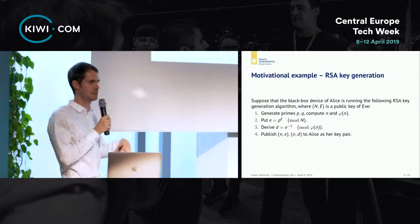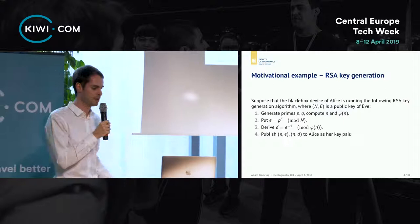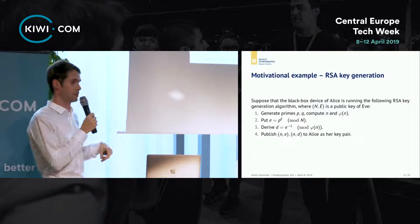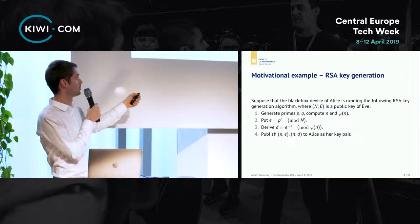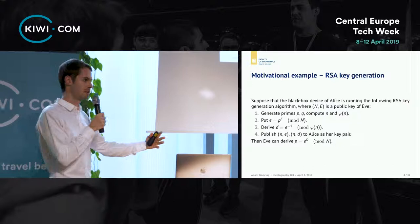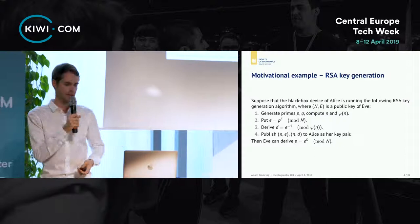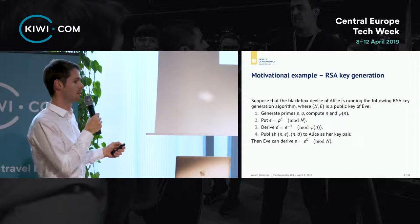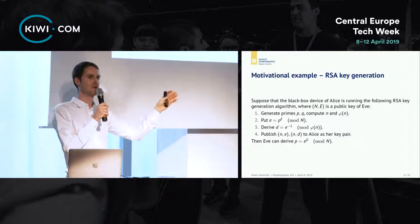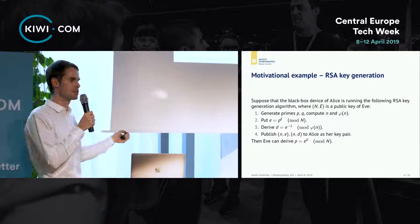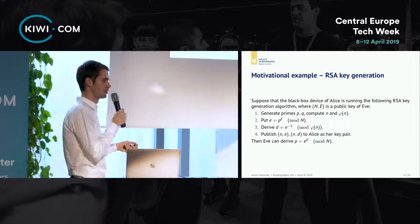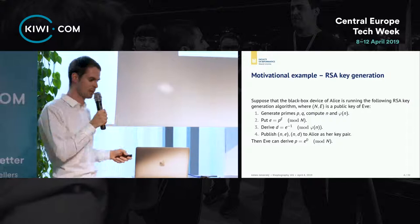In the third step, the device computes the private exponent — which is very private to Alice and serves for decryption. Alice ends up using the key pair consisting of the public and private parts. Now if you are the attacker — which in cryptography we call Eve — you can easily derive the prime from the public exponent. The public exponent is distributed over the internet, so Eve simply eavesdrops on it and computes the private key from the prime.